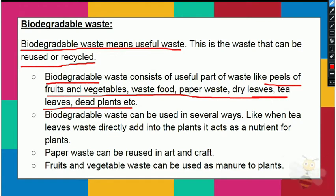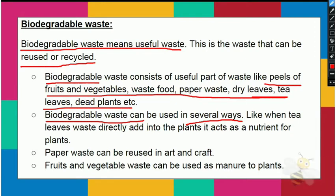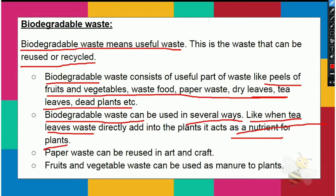Biodegradable waste includes food waste, vegetable peels, and so on. Biodegradable waste can be used in several ways. For example, tea leaves can be directly added into plant soil and act like nutrients — they are a nutrient for plants. All types of paper can also be used for crafts.